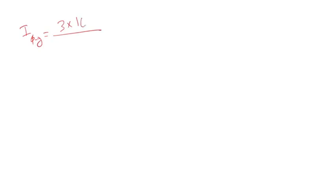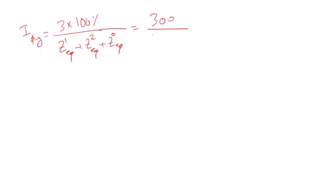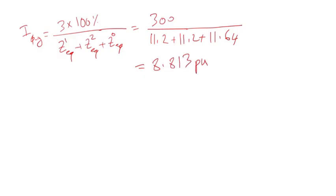The phase-A to ground fault — since I'm working in percent — is three times 100 percent divided by the positive equivalent impedance plus the negative equivalent impedance plus the zero sequence equivalent impedance. That's 300 divided by 11.2 plus 11.2 plus 11.64, which comes to 8.813 per unit. That is the phase-A to ground fault in per unit.